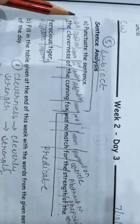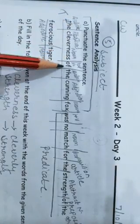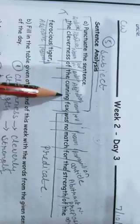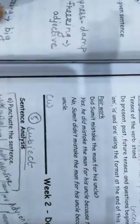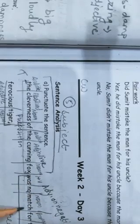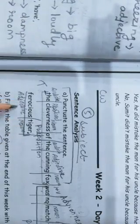Now one by one. The is article. It is what article. Cleverness is abstract noun. Of preposition. The is again article. Cunning adjective. Fox is noun. Here you can see cunning is adjective fox noun was is helping verb. No adverb of negation. Match is noun. For again preposition. For again preposition the again article. Strength is abstract noun. Of preposition. The article. Ferocious adjective. Tiger noun. Tiger ferocious tiger so it is adjective.